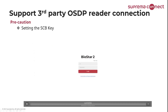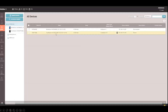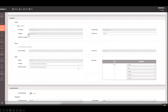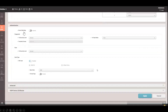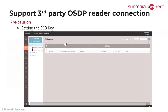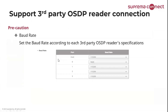I'll have a short video clip to show you step-by-step how to set the SCB key using BioStar 2. This section can be found in BioStar 2 under Device. There is an entire section in CoreStation where you must set up the SCB key — by setting and applying it, you will be able to configure the SCB key. Another important factor is the baud rate. Set the baud rate according to each third-party OSDP reader — this information is not provided by Suprema, so you must check with your third-party OSDP reader for the baud rate on each port.